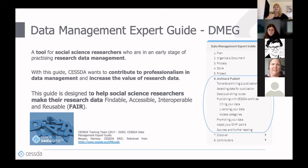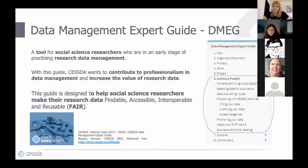This guide contributes to professionalism in data management and increases the value of research data. Since it covers all stages of the data lifecycle, it is designed to help social science researchers make their data FAIR—meaning findable, accessible, interoperable, and reusable—not only for other researchers and people, but also for machines, enabling automated processes.